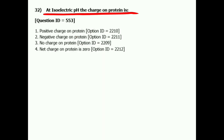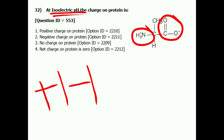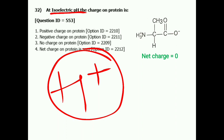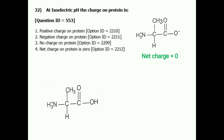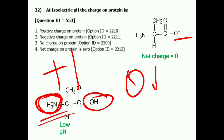Question number 32: At isoelectric pH, the charge on a protein is basically? Before discussing that — in an amino acid, the carboxyl group carries a negative charge and the amino group carries a positive charge. So the net charge is plus 1 minus 1, which equals zero. So we can say the net charge is zero or neutral.